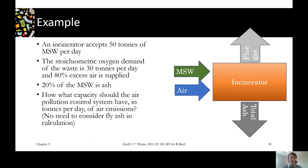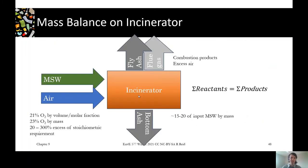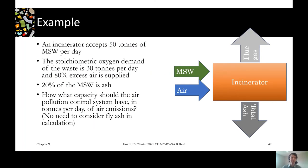Let's try an example. In our example, an incinerator accepts 50 tons of MSW per day. The stoichiometric oxygen demand, based on our balanced reaction, is 30 tons per day of oxygen, and it's specified that 80% excess is supplied. So we get 100% of the stoichiometric requirement plus 80% extra.